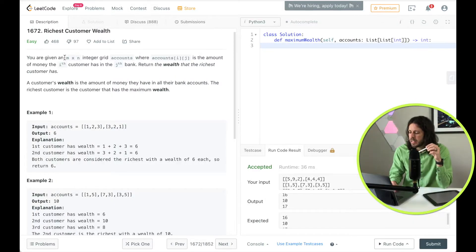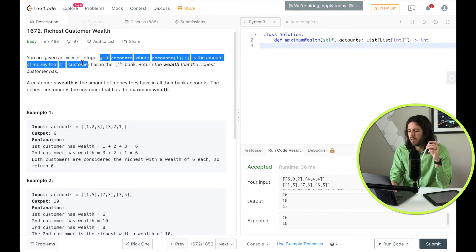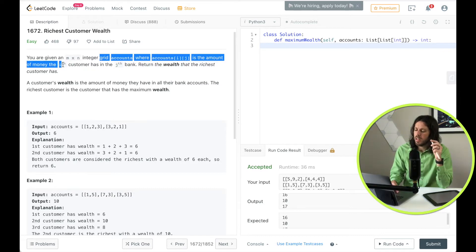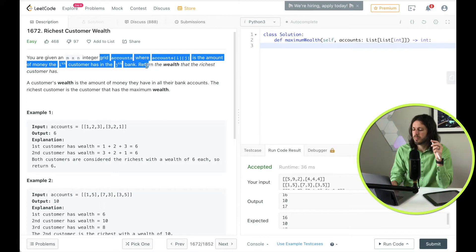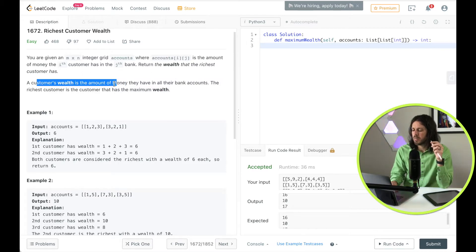Today's problem is number 1672, richest customer wealth. So I'll read through the problem. I'll go through an example. I'll show you how I design a solution and then we'll code the solution.